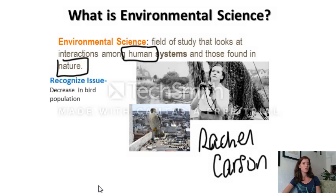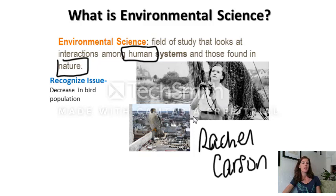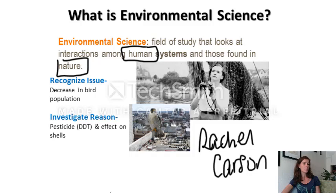Environmental science helps us to recognize issues. If we can understand the science behind how nature works, we can start to see if there are deficiencies, stresses on the environment, or changes from what is normal. Rachel Carson and others at the time recognized a decrease in bird populations — hence the title of her book Silent Spring. Environmental science gives us the ability to recognize those issues and then investigate reasons for change.